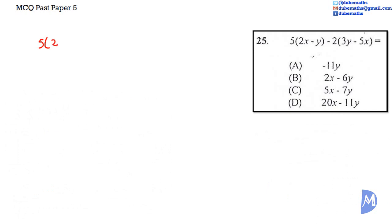5 multiplied by 2x minus y, minus 2 multiplied by 3y minus 5x. Remember distributive law: this equals 10x minus 5y minus 6y plus 10x. 10x plus 10x equals 20x, and negative 5y subtract 6y equals negative 11y. The answer is D.